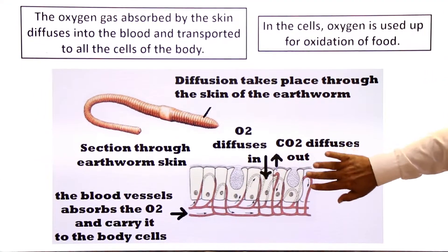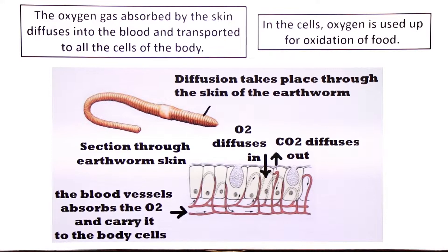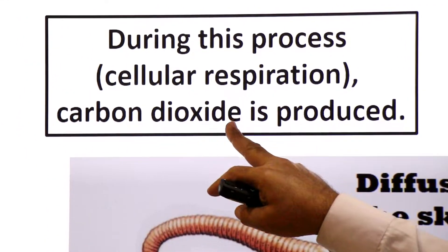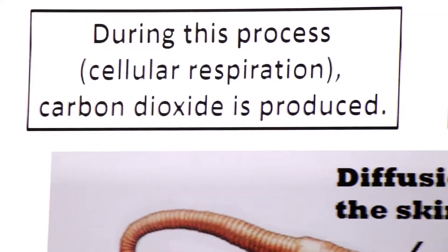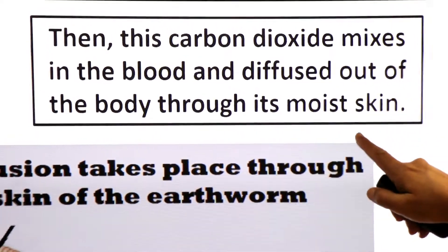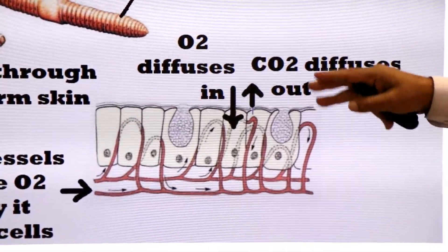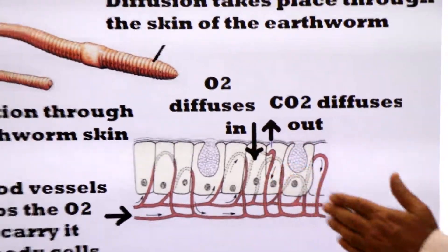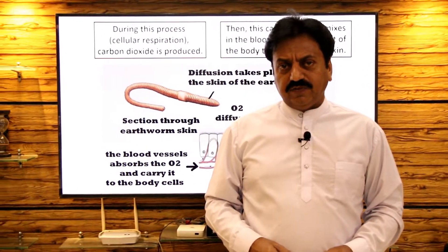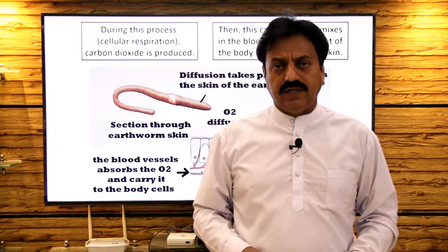At the same time, carbon dioxide diffuses out. During cellular respiration, carbon dioxide is produced, and this carbon dioxide mixes in the blood and diffuses out of the body through its moist skin. In this lecture we have discussed that the respiratory organ of earthworm is the skin, and the respiration which takes place through the moist skin is called cutaneous respiration.